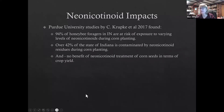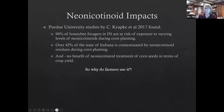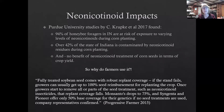So why would farmers pay for neonic-treated seeds if there's no yield benefit? Because fully treated soybean and corn seeds come with robust replant coverage — if the stand fails, they can get 100% seed reimbursement. But if the seeds aren't treated, insurance isn't going to cover them, or will cover them at a much lower rate. So the system is set up such that if you want crop insurance, you're going to need to use neonic-treated seeds. It's a very perverse incentive.